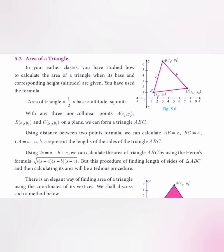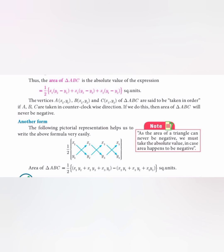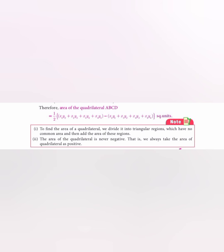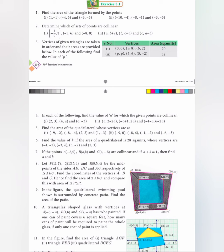Let us continue with coordinate geometry from 10th mathematics. As we have already seen the area of a triangle — how to find the area of a triangle using the coordinates of vertices — and also the collinearity of points. We will continue with the same exercise. The area of triangle formula from the previous class will be used again, and collinearity of three points means the area of the triangle becomes zero.